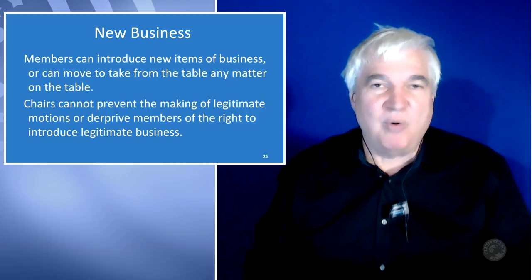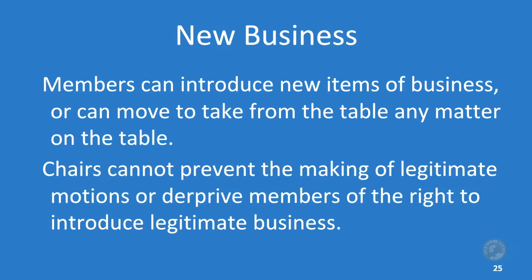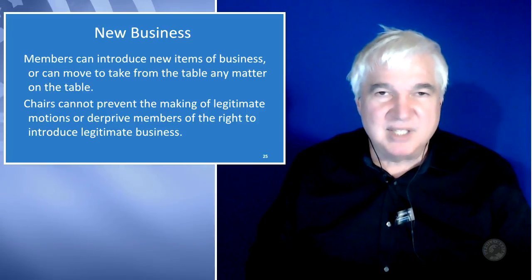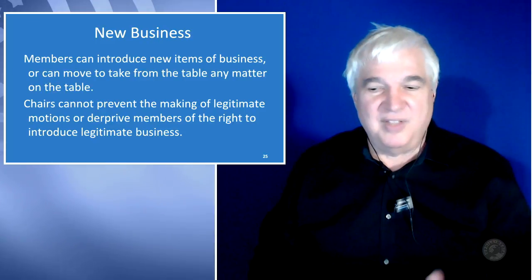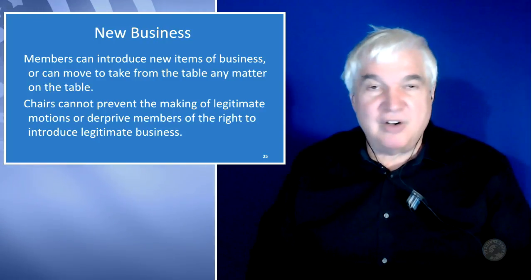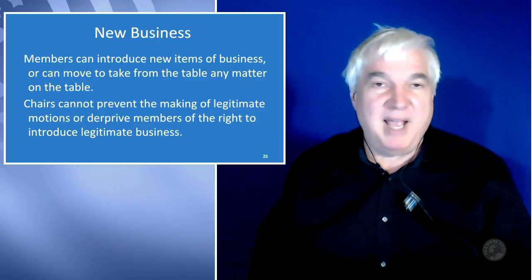New business is also an area you have to watch for. The last agenda item in the standard order of business is called new business. Chairs who don't want to deal with interference from the membership sometimes leave this agenda item off. If they do, you should amend the agenda at the beginning of the meeting saying 'point of order, new business is left off the agenda, please add it.' If there is no order of business defined in the bylaws that says otherwise, this is an item specified in Robert's Rules of Order and they have to add it. Members can introduce new items of business or can move to take from the table any matter on the table.